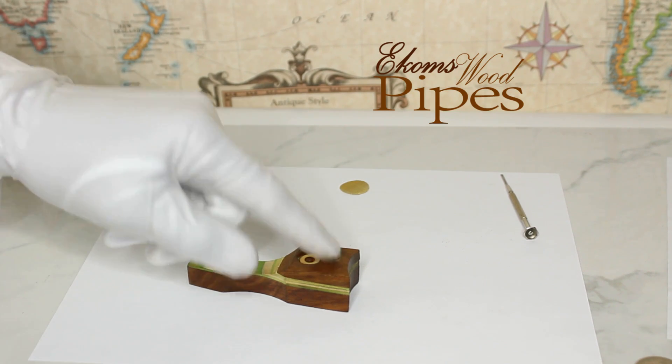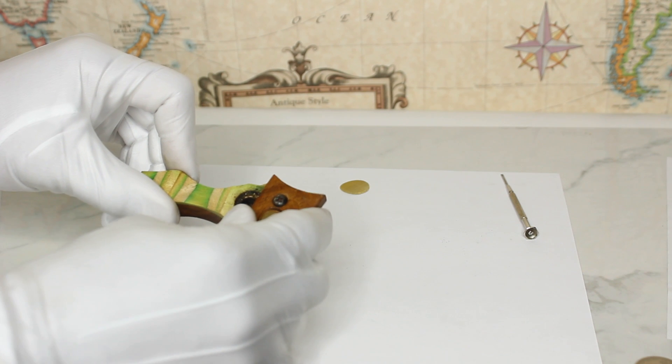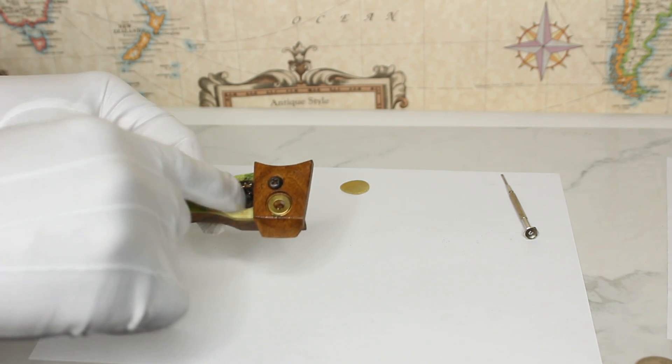Okay, so you have a pipe like this that you want to change the screen out. You want to just turn it to the side. And these are the kind that have a little lip around it.